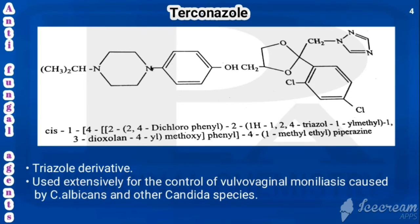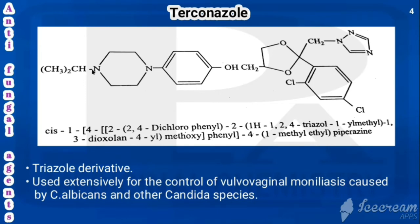For the chemical name of terconazole: the first portion of piperazine is position 1, and the 4-position has a substituent where hydroxymethyl connects to the dioxolane. At the second position of dioxolane, 2,4-dichlorophenyl is attached, and the same second position has 1H-1,2,4-triazol-1-yl-methyl. The ring is 1,3-dioxolan-4-YL connected with methoxyphenyl, and at the fourth position of piperazine there is 1-methylethyl. That is the chemical name of terconazole.